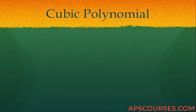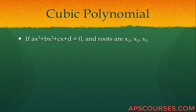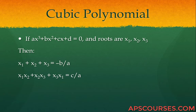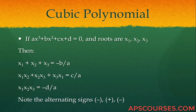In the case of cubic polynomials: if ax cubed plus bx squared plus cx plus d equals 0 and its roots are x1, x2, x3, then the sum of roots is minus b by a, the sum of products taken 2 at a time is positive c by a, and the product of all roots is minus d by a. Notice the alternating signs: minus, plus, minus.